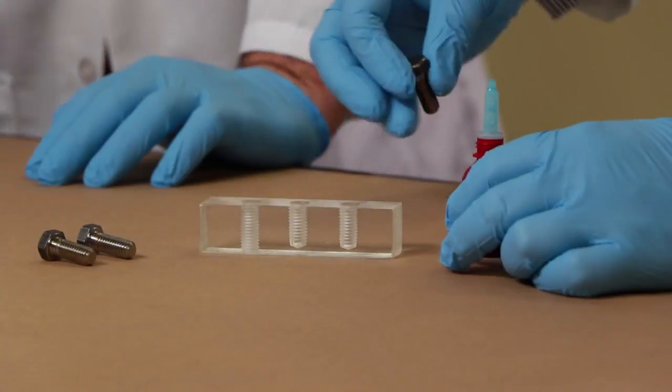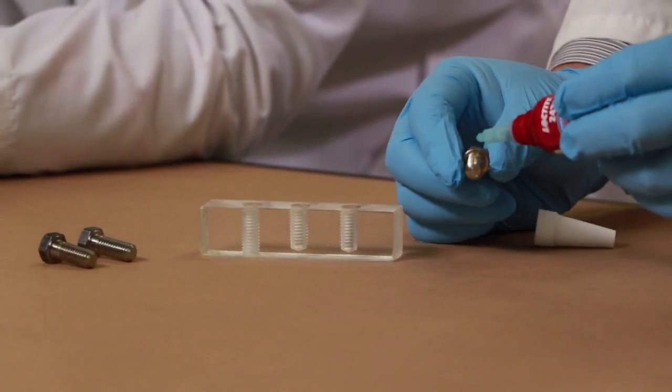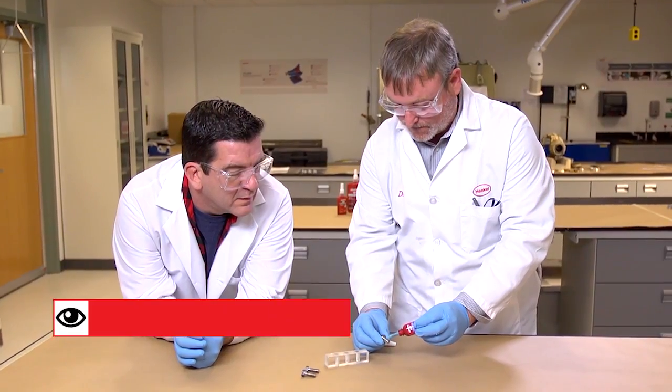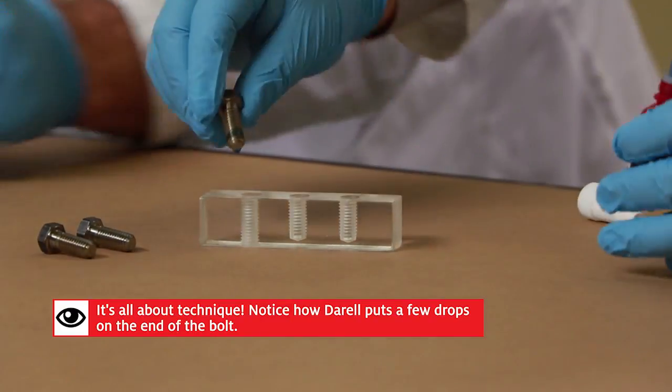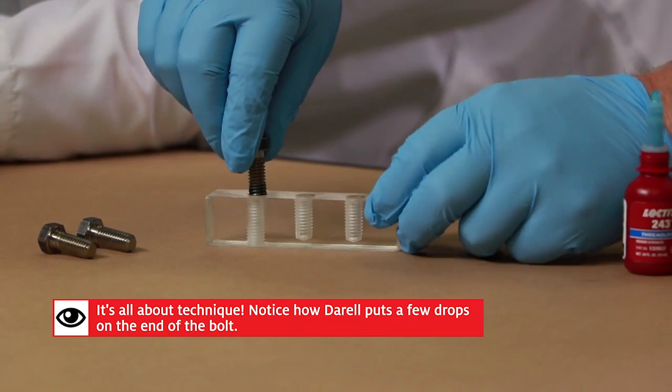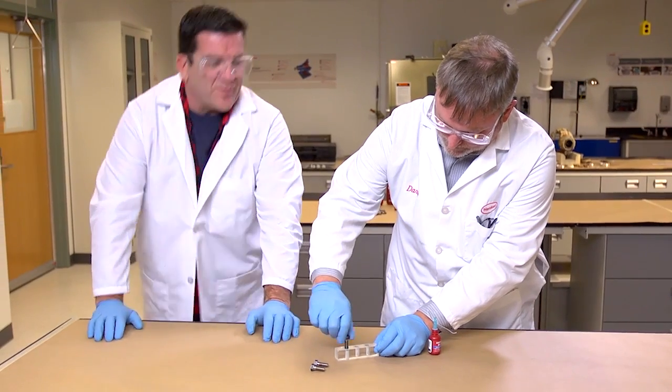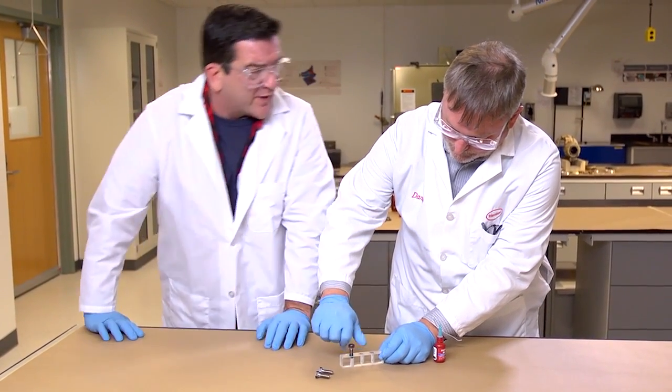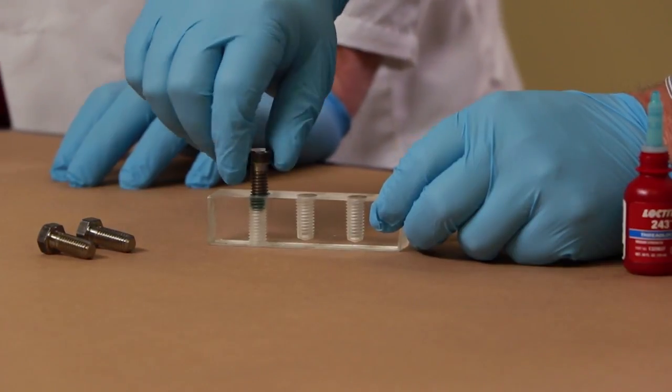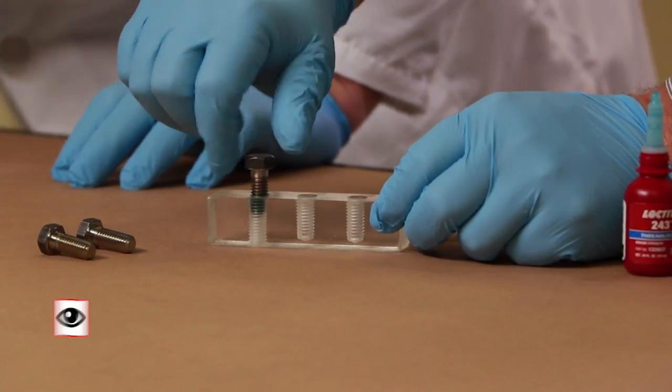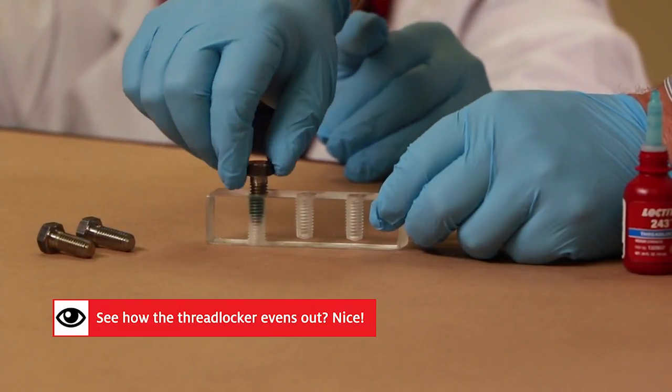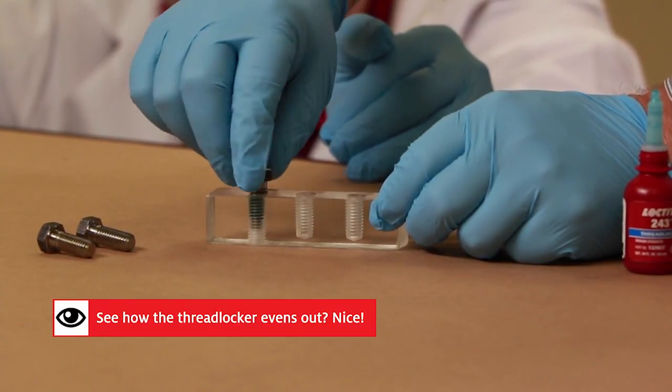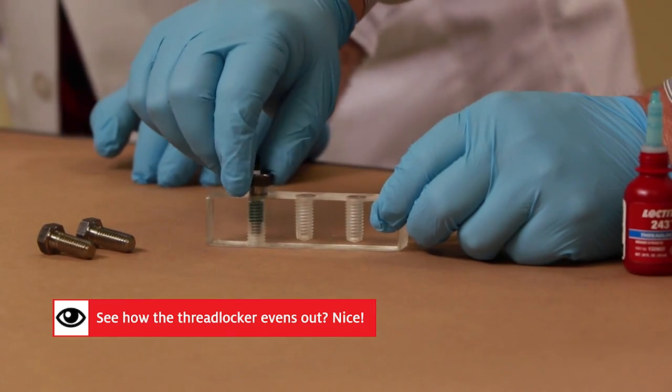So here's our through hole on the right. This would be a typical bolt-nut application with a through hole. You can see the threadlocker sitting down in all the threads down there. Yeah, it's going in nice. That's simple enough.